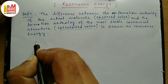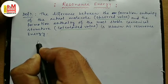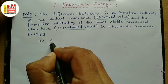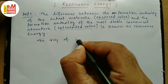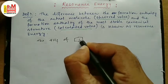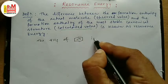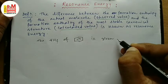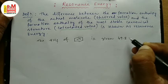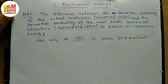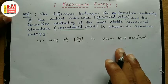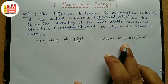Now let us calculate the resonance energy of benzene. The delta H_f, that is formation enthalpy, of the actual molecule — which is the resonance hybrid — is given as 49.8 kcal per mole. This is an observed value. All this data is collected from Peter Sykes.